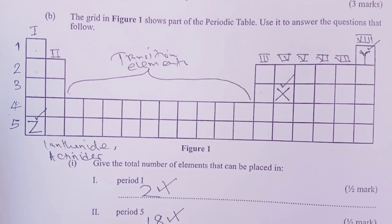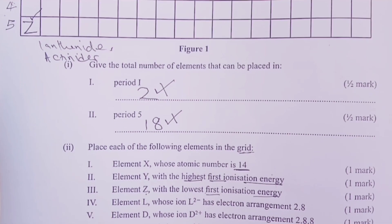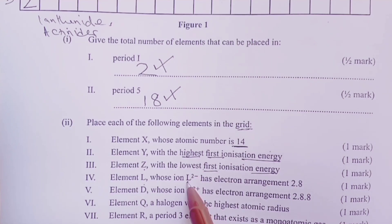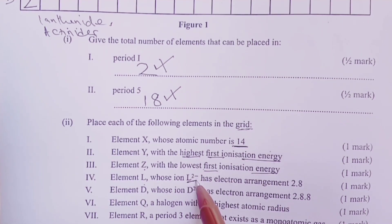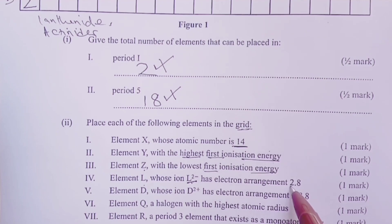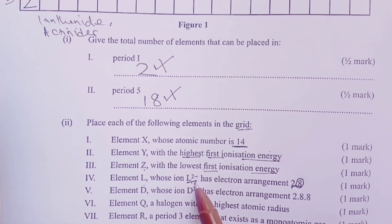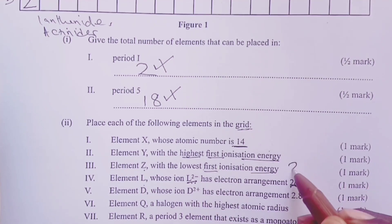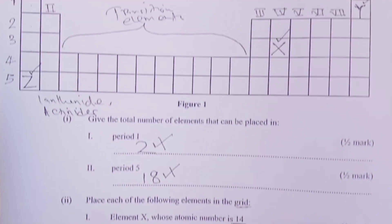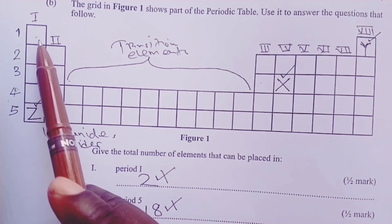That would earn ourselves the next mark. We are still asked to place element L, whose ion L2 minus, which means it accepts two electrons to form this ion. So the ion has an electrode configuration or an element of 2,8, which means this 8 here was achieved after accepting two extra electrons. So ordinarily the element has a configuration of 2,6, so that its ion can have a configuration of 2,8. For that matter, it's atomic number 8.